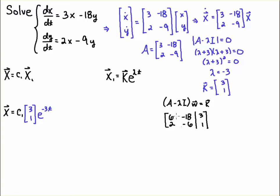Anyhow, this is what the A minus lambda I will look like. If you're wondering where the 6 and the minus 6 come from, remember that this is A minus lambda I. So, this is going to be 3 minus (minus 3), where minus 3 is the eigenvalue. So, 3 minus minus 3 is 3 plus 3, which is 6. And minus 9 minus minus 3 is minus 9 plus 3, which gives us minus 6. Think about getting the signs correct: minus 9 plus 3 is minus 6. Alright, and then we're going to solve the system.